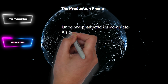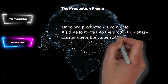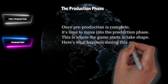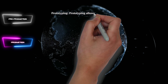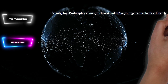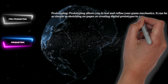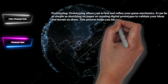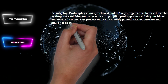The second phase is the production phase. Once pre-production is complete, it's time to move into the production phase. This is where the game starts to take shape. Prototyping allows you to test and refine your game mechanics. It can be as simple as sketching on paper or creating digital prototypes to validate your ideas and iterate on them.